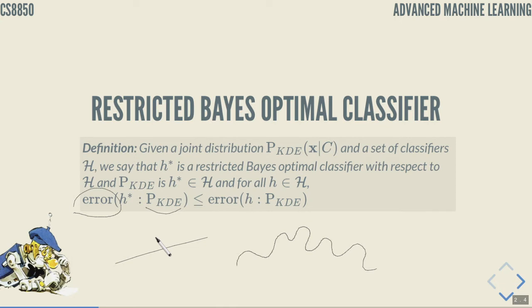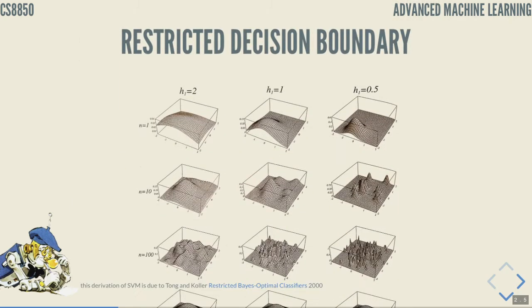Instead of actually tracing the exact Bayesian optimal decision boundary, we consider the class of linear classifiers and choose among all possible linear classifiers the one that minimizes our Bayes error with respect to the estimated distribution. If we try to trace the decision boundary exactly, we get high variance — every extra point causes the boundary to wiggle. Using a linear restriction makes the approach more robust.